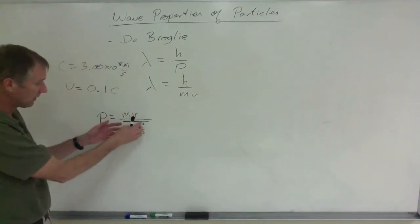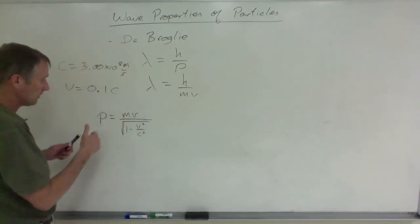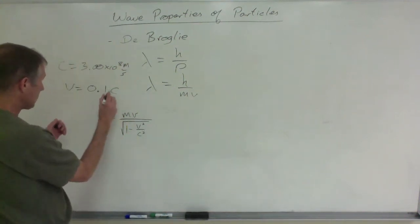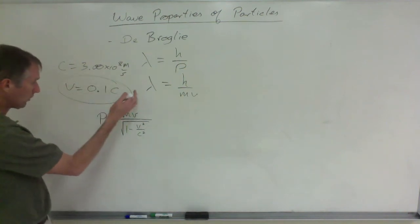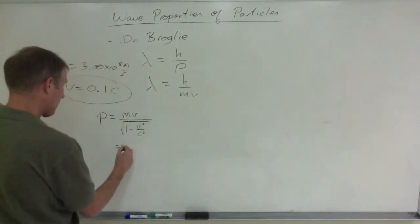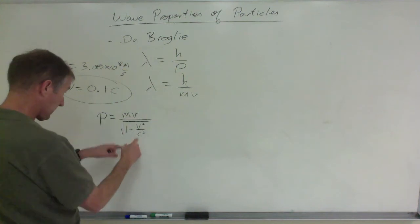By the way, you don't have to go put in 3 times 10 to the 8 every time you calculate this out. You can just put in, if you have something like the velocity is 0.1c, you can find the denominator.